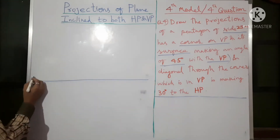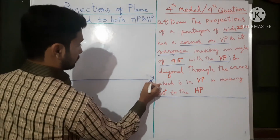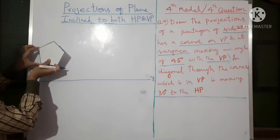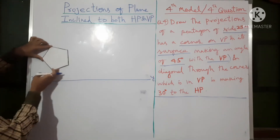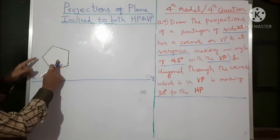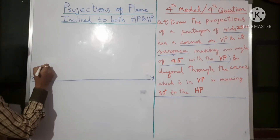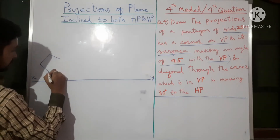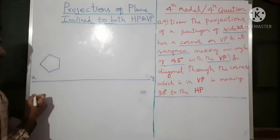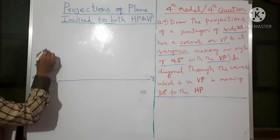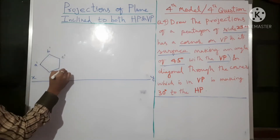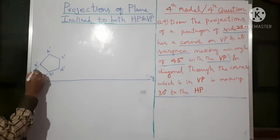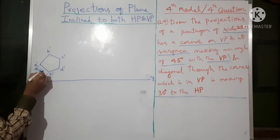Wherever the true shape of the object is visible, that view you need to draw first. So let us draw the first front view with the XY line. This is corner resting — corner resting means the problem will have the corner at the bottom, not an edge. Edge resting means a straight edge comes at the bottom. Here the corner comes first. Let us draw the pentagon.